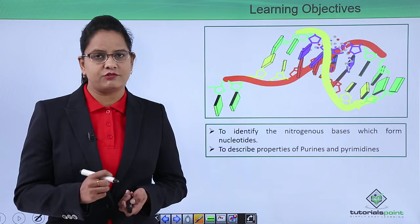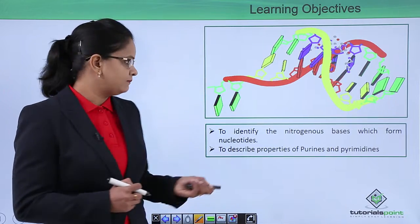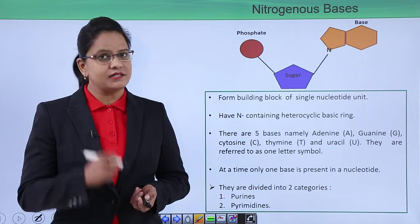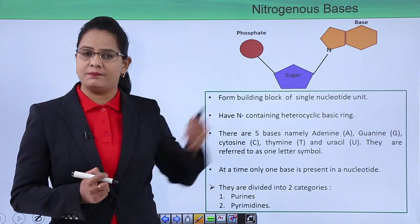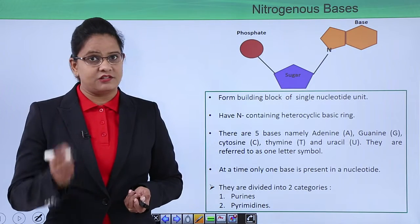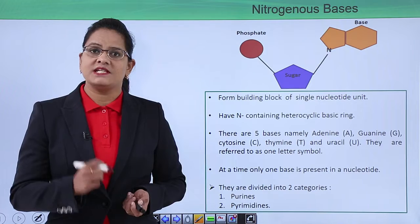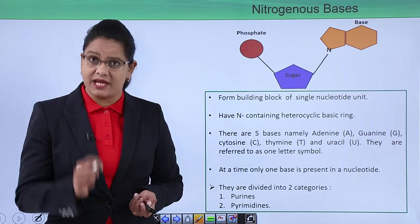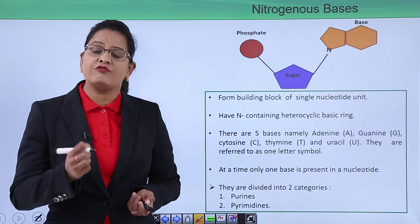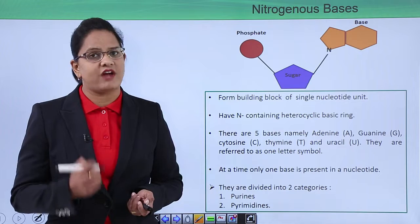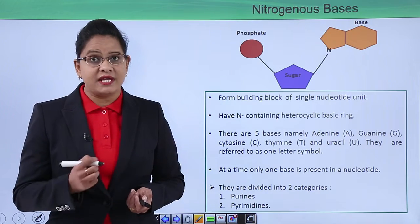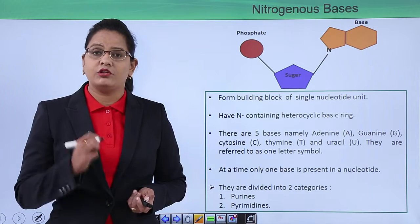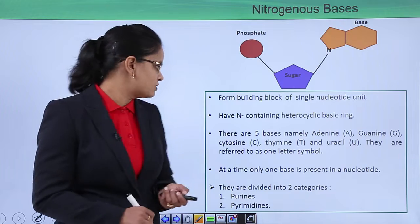We will also describe the properties of two important types of nitrogenous bases: purines and pyrimidines. A nucleotide has a ribose sugar, a phosphate, and a base. This nitrogenous base is what makes the difference in the nucleic acid, and therefore it can be called the building block for the nucleic acid. It is a nitrogen-containing heterocyclic basic ring compound — heterocyclic because it has both carbon and nitrogen atoms in the ring. It is basic because nitrogen has a basic nature due to the presence of lone pair of electrons.